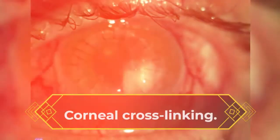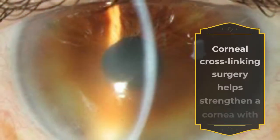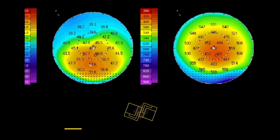Corneal crosslinking. Corneal crosslinking surgery helps strengthen a cornea with keratoconus. A topography scan may be done to see if this surgery is needed. After surgery, scans are done to monitor the eye.